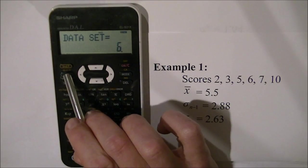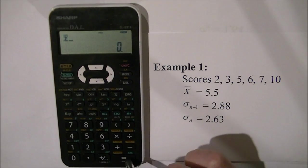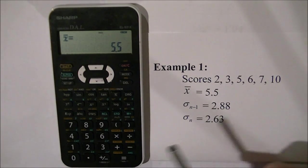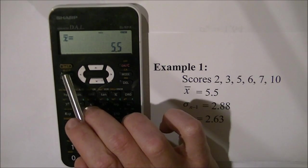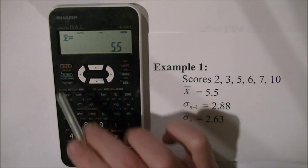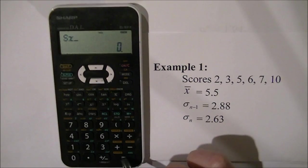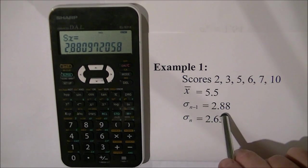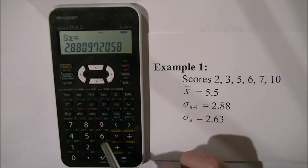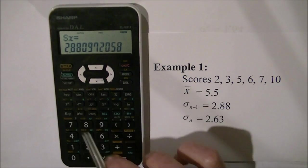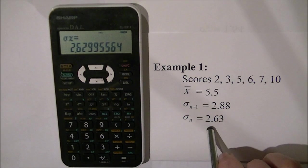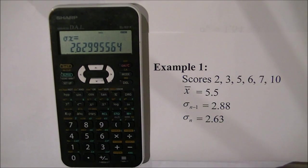To find the mean I press alpha 4 equals and I get 5.5. To find the sample deviation I press alpha 5 and there's the sample deviation 2.88. And finally the population deviation which is alpha 6, and that comes up with 2.63 rounded.